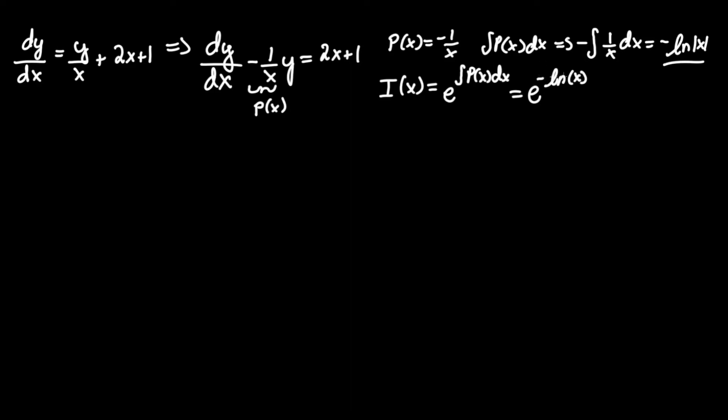Apply the logarithmic rule bringing the coefficient in front of the logarithm as the power of what's inside. This gives e to the ln x to the negative 1. Now we can cancel e and ln, leaving I(x) equals x to the minus 1, which is also equivalent to 1 over x.